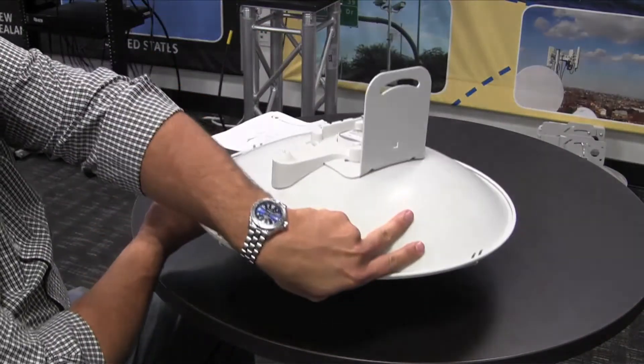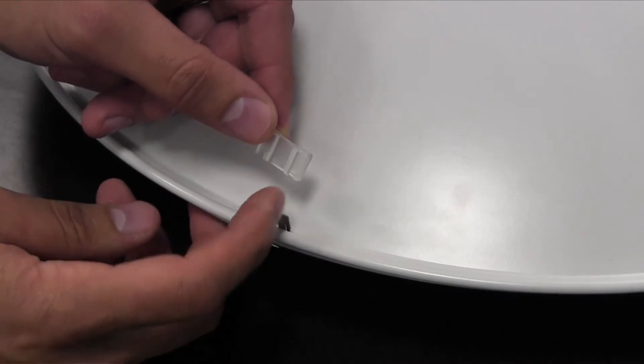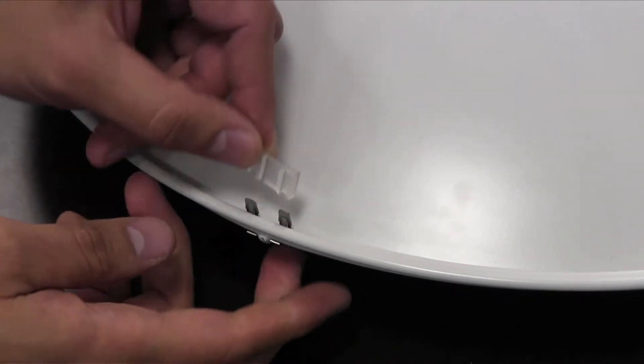Flip the assembly over. Attach the retaining clip covers to the retaining clips with the little notch facing outward from the dish.